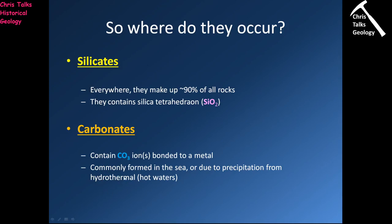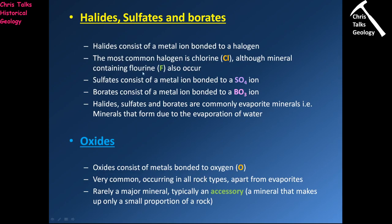Carbonates can also form through hydrothermal processes where hot water circulates in the crust, but that's a much smaller percentage — the vast majority of carbonates form in the ocean. Halides, sulfates and borates are grouped together because they all tend to occur in the same environment: evaporite conditions, commonly associated with a restricted body of water such as a lake in the desert.